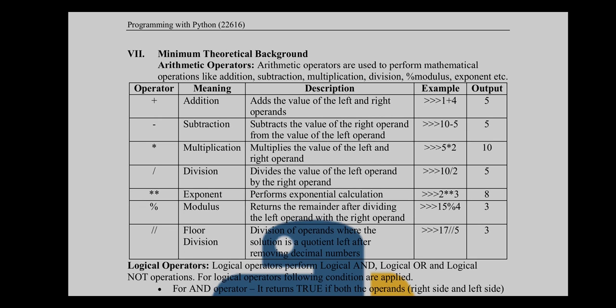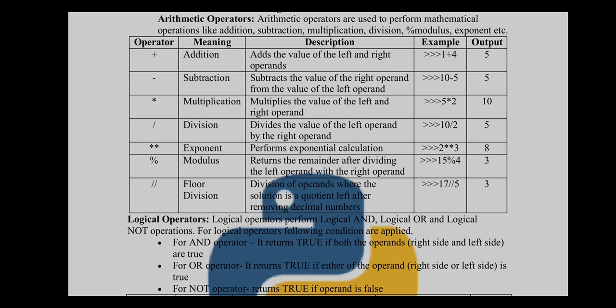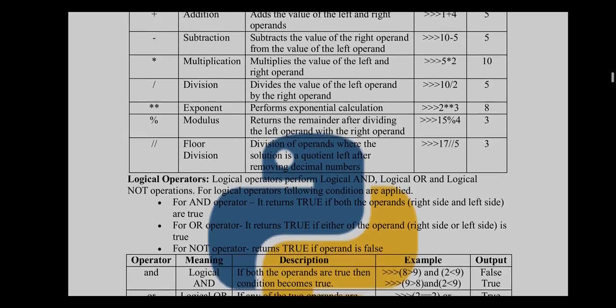Two asterisks denote the exponent operator. For example, if you want to perform two raised to three, you use the exponent operator and get the result. Next is modulus, which shows the remainder after dividing the left operand by the right operand. For example, 15 mod 4 divides 15 by 4 and the remainder is 3, which is the output.